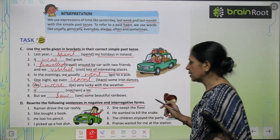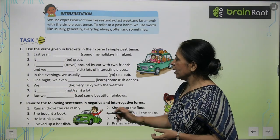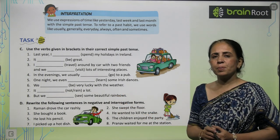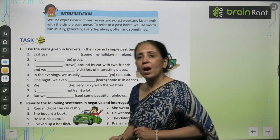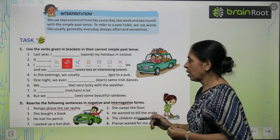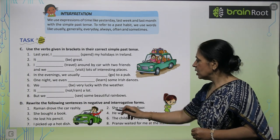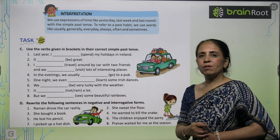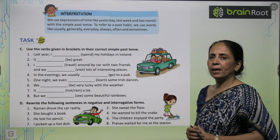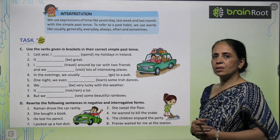Now rewrite the sentences in negative and interrogative form. First sentence: 'Raman drove the car rashly.' Negative: 'Raman did not drive the car rashly.' Interrogative: 'Did Raman drive the car rashly?' Second sentence: 'She swept the floor.' Negative: 'She did not sweep the floor.' Interrogative: 'Did she sweep the floor?' The remaining sentences you will do yourself.